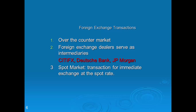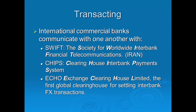For large-scale transactions, international commercial banks communicate using SWIFT — the Society for Worldwide Interbank Financial Telecommunications — which is essentially a large network of computers through which financial transactions take place. Another system is CHIPS, the Clearing House Interbank Payment System, which also enables international commercial banks to communicate. The last is ECHO, the Exchange Clearing House, which is the first global clearing house for settling interbank foreign exchange transactions. To trade internationally, a country must be part of these exchanges.